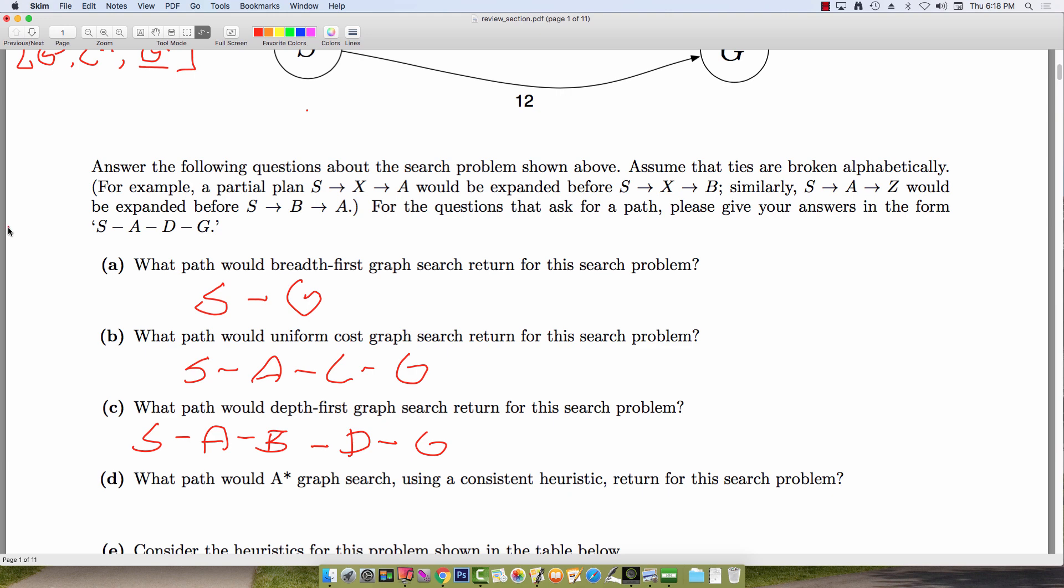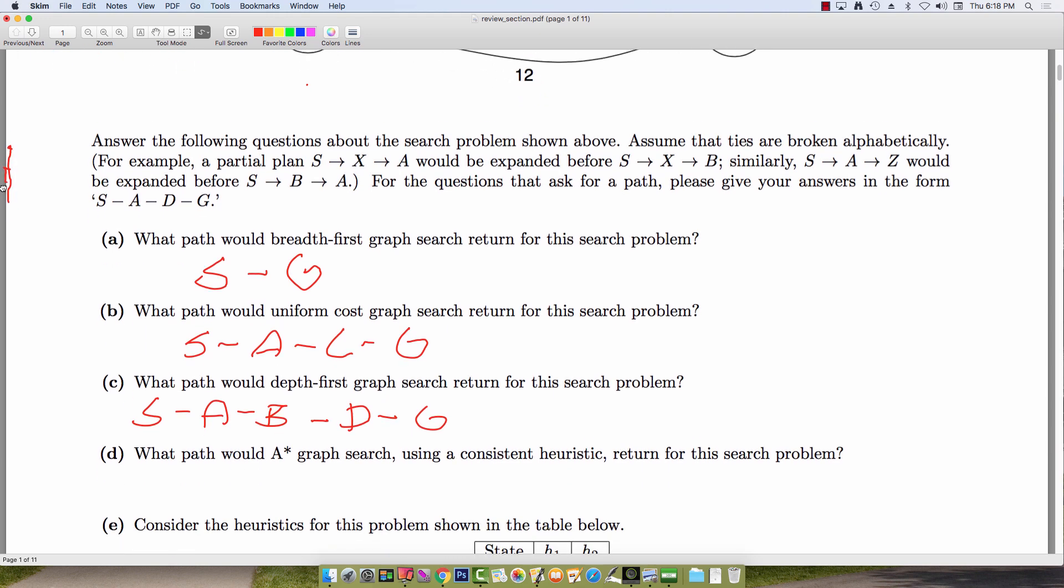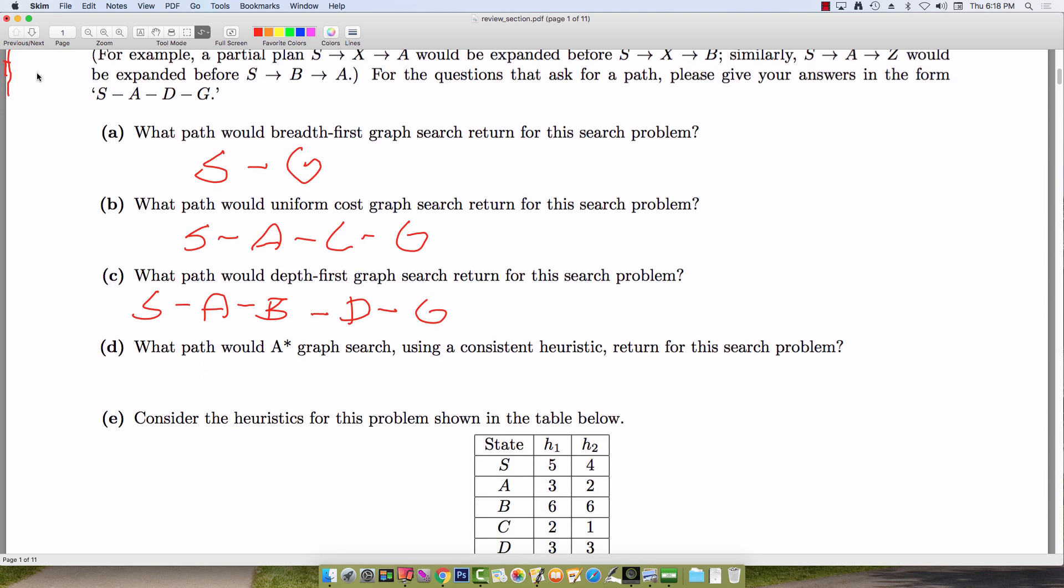Now for the next part of this problem, it's simply asking, given an arbitrary consistent heuristic, what path would A-star graph search return? And what this is really testing is if you know that when you use a consistent heuristic, A-star graph search will always return the optimal path. Because we did not use a heuristic here and we already know about optimality of uniform cost graph search, we can immediately jump to the same path returned by part B, which is S, A, C, G.